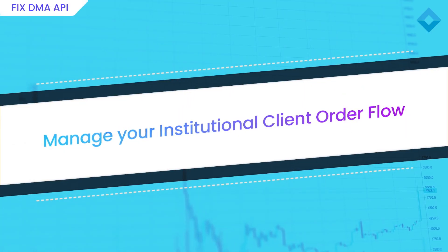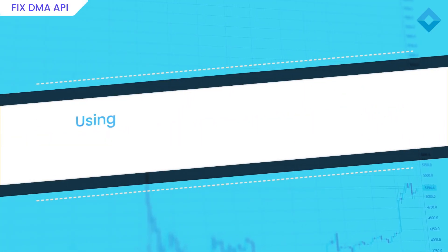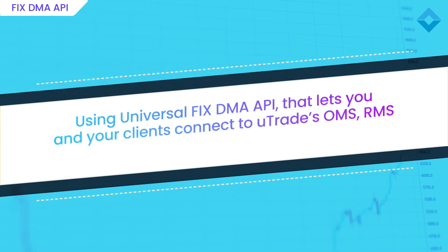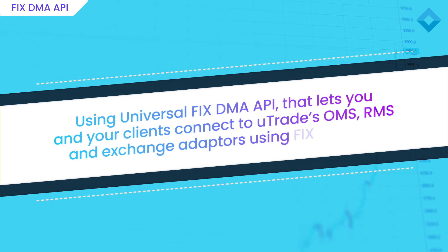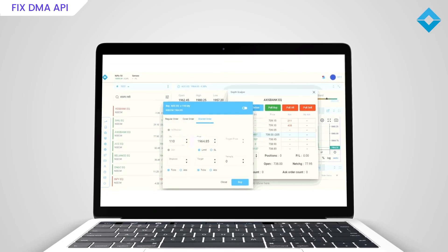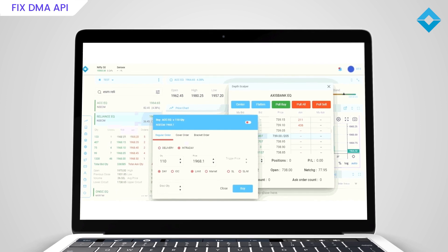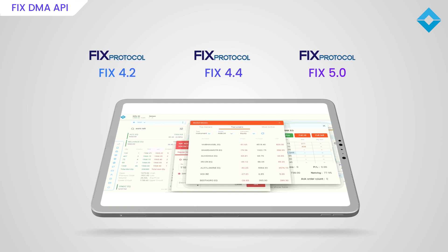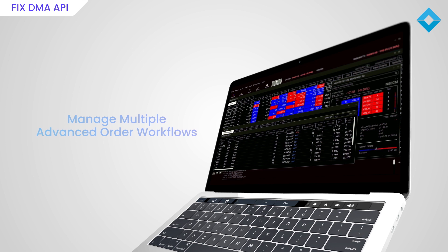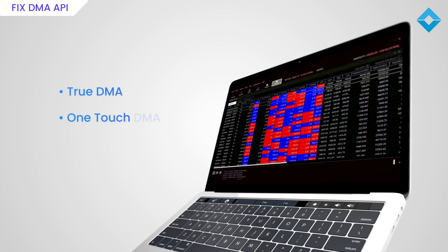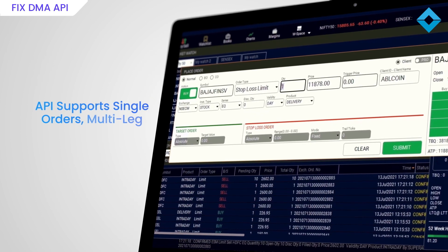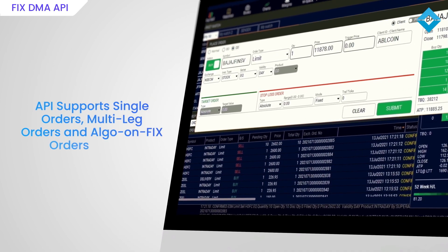For managing your institutional client order flow, UTrade offers its universal FIX DMA API that lets you and your clients connect to UTrade's OMS, RMS and exchange adapters using FIX protocol. Our FIX gateways support all popular versions of FIX used in the industry, including FIX 4.2, FIX 4.4 and FIX 5.0. The FIX API can be used to fully manage multiple advanced order workflows, including True DMA, OneTouch DMA and HighTouch Care Order Management. This API supports single orders, multi-leg orders and algo on FIX orders as well.